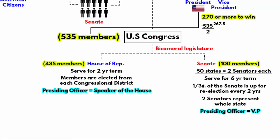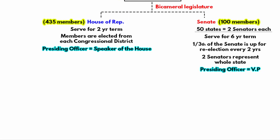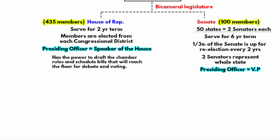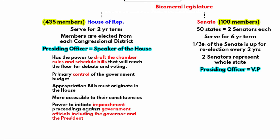What is the difference between the House and Senate chambers? In the House of Representatives, the majority party — whether Democratic or Republican — holds significant power to draft chamber rules and schedule bills that will reach the floor for debate and voting. They also have primary control of the government budget. All appropriation bills, which are laws that authorize payment of money, must originate in the House. The House also has more members than the Senate, meaning individual members are more accessible to their constituents. The House also has the power to initiate impeachment proceedings against government officials, including the Governor and the President.